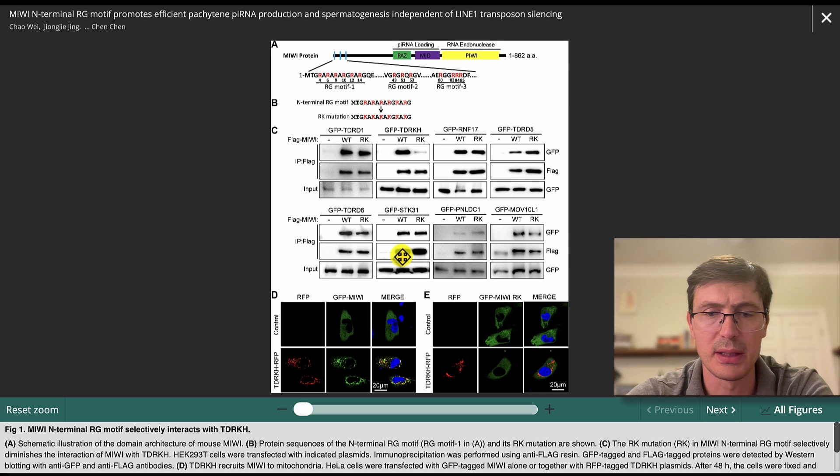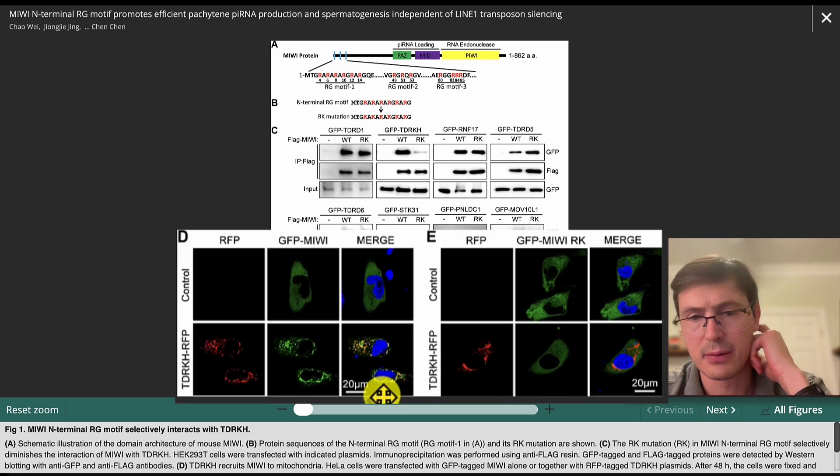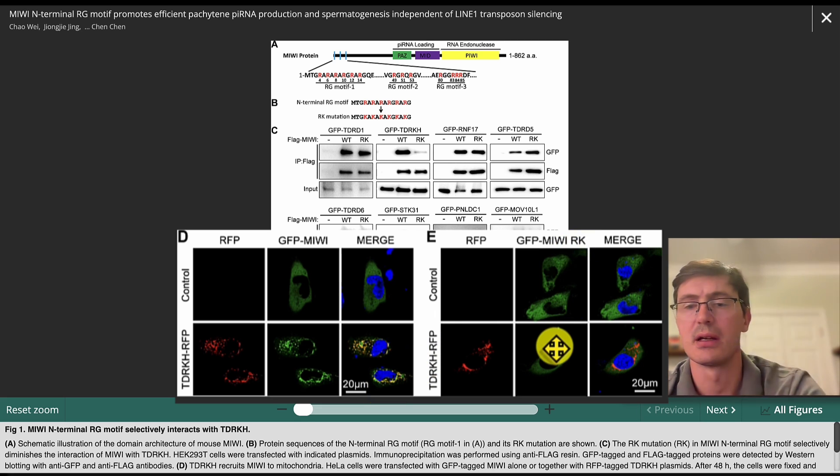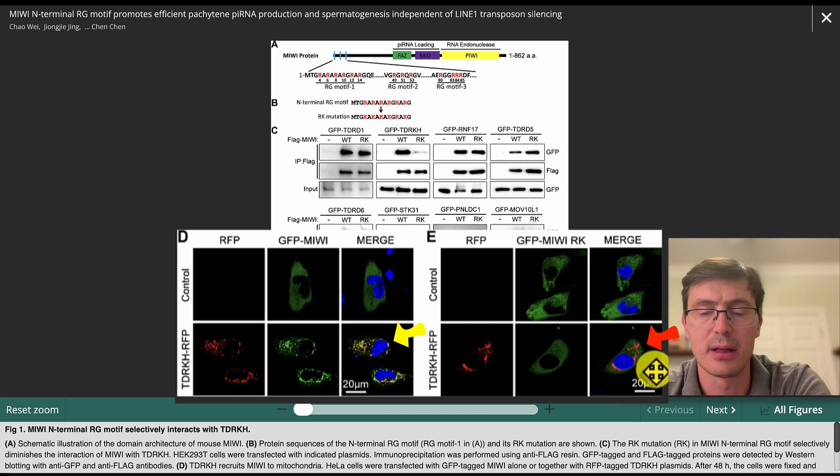This is an IP technique, and the same that they observed with IP, they observed with IF, where they see the colocalization here, and they don't see it when you have MIUI-RK colocalization. You can see here with the yellow and the red.